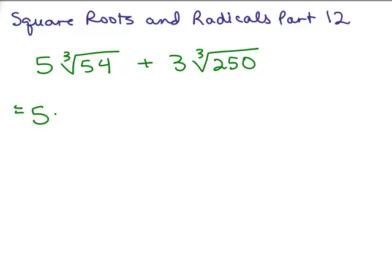So let's simplify cube root of 54. You have to think if there's a perfect cube in that and that's actually 27 times 2. 27 is the perfect cube. And for 250, you don't see it, divide by 2 and in this case, that gives you your perfect cube, 2 times 125.